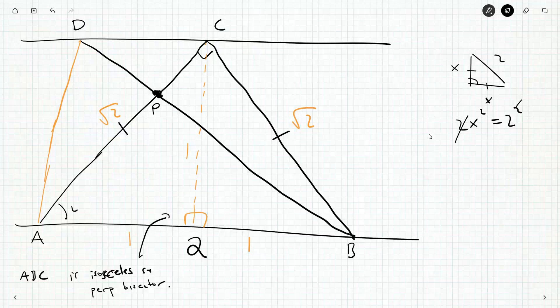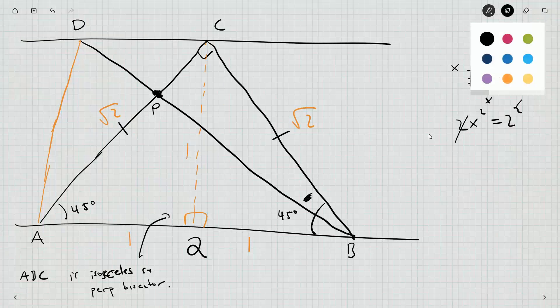And so if we have an isosceles right angle triangle, both of these sides are X, two X squared is going to be two squared. So dividing by two on both sides, X squared is going to be two. So both of these are root two.